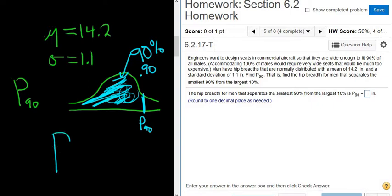We'll use the normal calculator. The probability that X is less than or equal to blank needs to be equal to 90%. P90 will appear here - this is the X value that separates the bottom 90% from the top 10%.